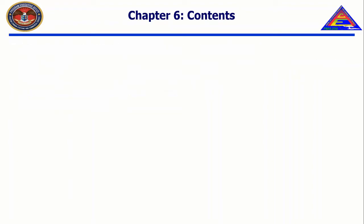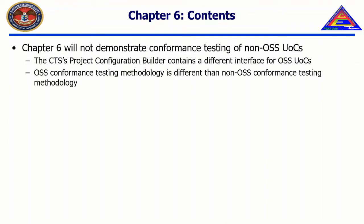This chapter has the notable exception that all UOC face segments are non-OSS UOCs. This is intentional, as the Project Configuration Builder for OSS UOCs contains a different user interface than non-OSS UOCs. Furthermore, the theory of testing an OSS UOC is slightly different than testing other types of UOCs. Demonstrations of non-OSS UOC conformance tests are contained in Chapter 5.